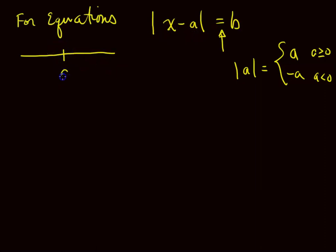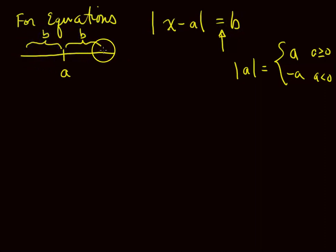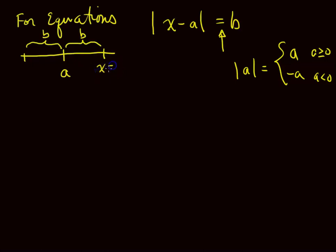A is some point on the number line, because we use the beginning of the alphabet for constants, and X is a variable that will float around. If you say the distance between X and A is B, then you could go to the right B units or to the left B units to find where X is. So one possible value for X is A plus B, and another is A minus B — X would be at just these two points because of the equal sign.